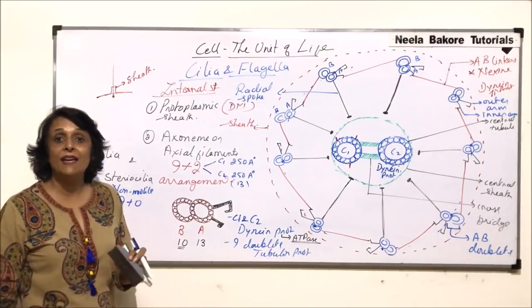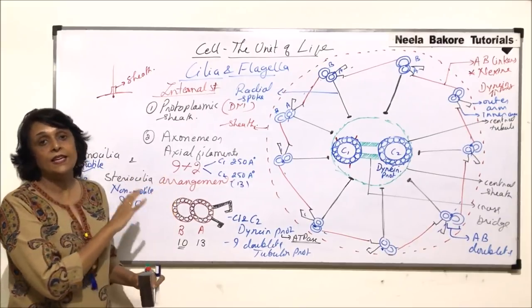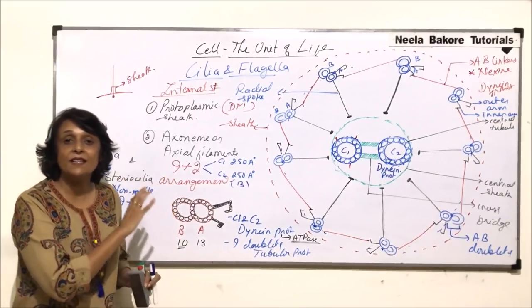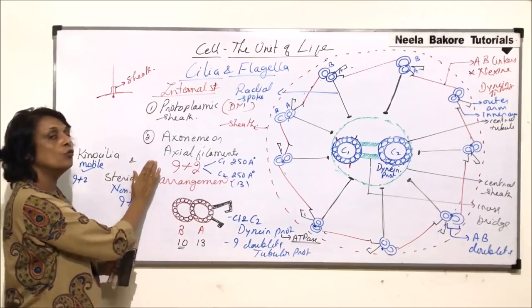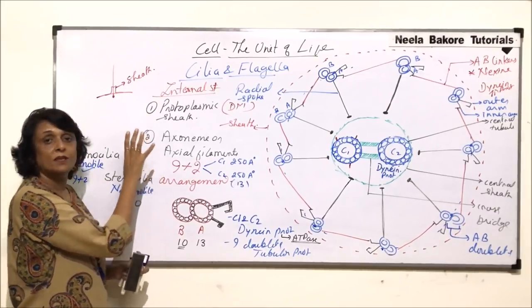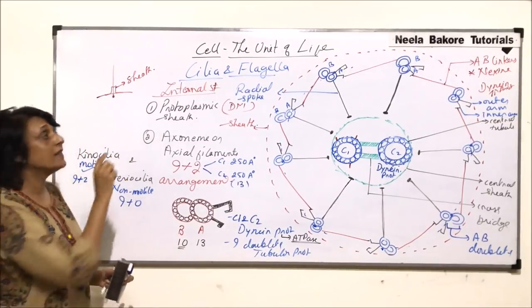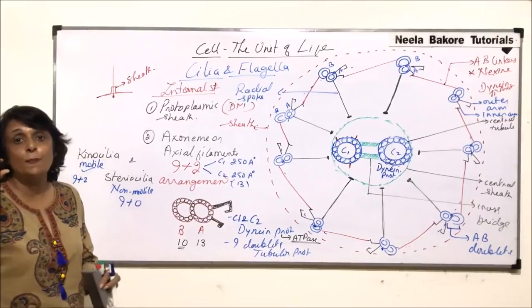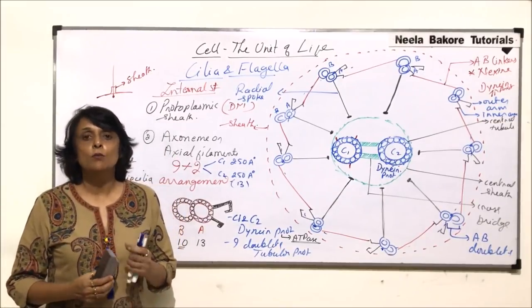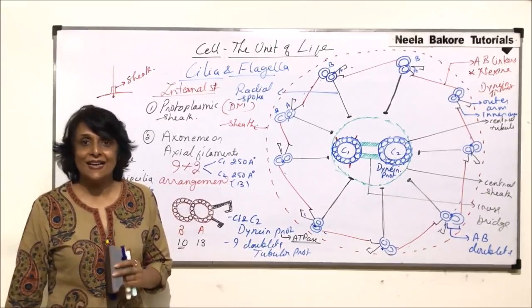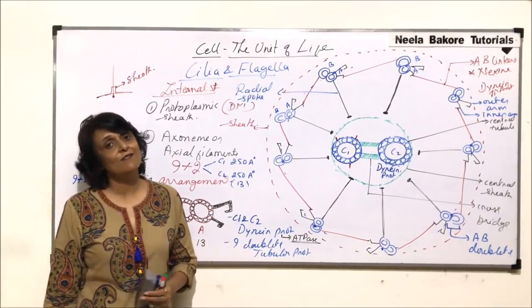To summarize, cilia and flagella have exactly the same internal structure, divided into two parts: the axoneme — the central microtubular part — and the sheath, which is present only in the basal part. The movements and functioning of cilia and flagella have already been studied. This completes the internal structure of cilia and flagella.